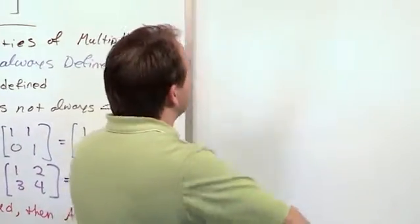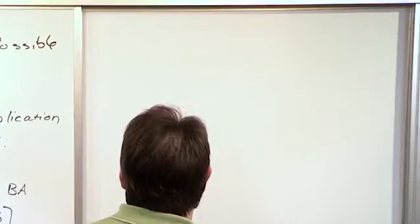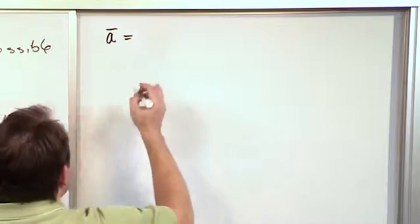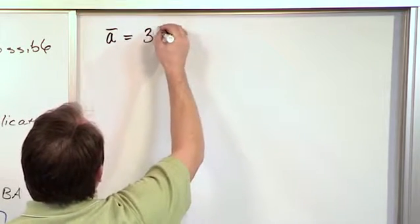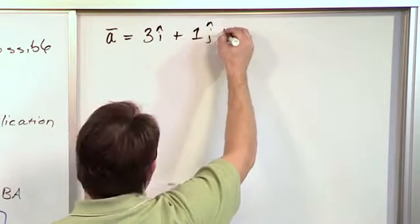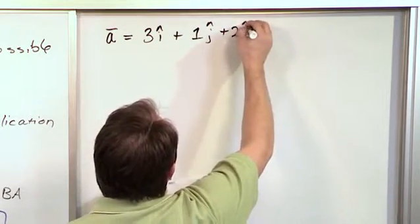So in physics or trig or whatever class you've studied in the past, we usually write a vector with a bar on top. And if you remember, we might write a vector something like this: 3i hat plus 1j hat plus 2k hat.